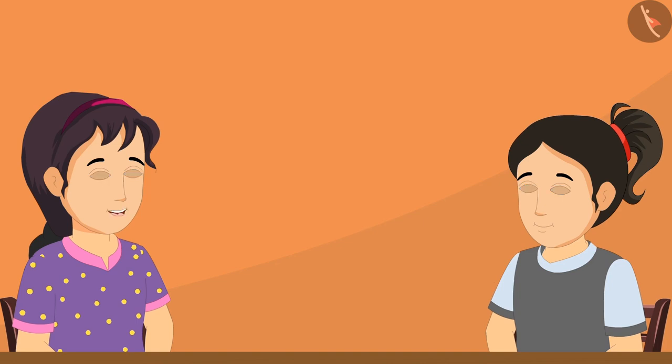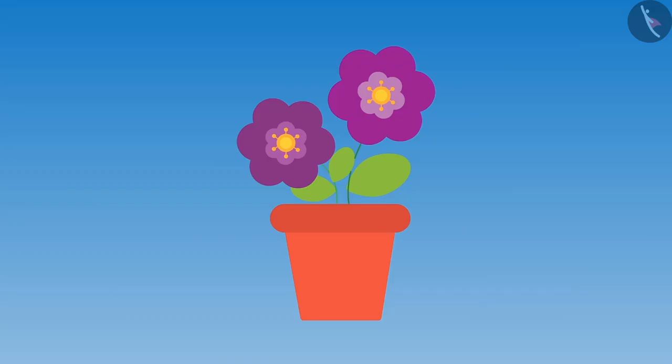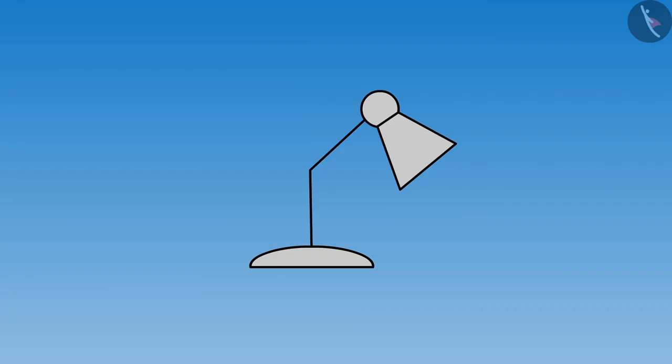Meena says she too found two objects with angles more than a right angle. She points to a flower pot and says, look at that flower pot carefully — there are two corners at the bottom of it, and both corners are making angles greater than a right angle. The other object is very special — I can make any angle I want with it. That object is right in front of you, Riva — this lamp. Can you tell me which angle is formed between these handles? Riva replies, this angle is greater than a right angle.